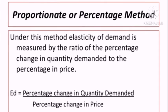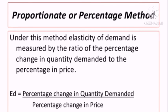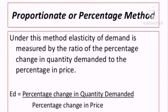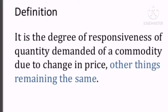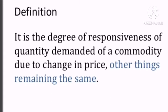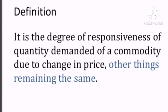Under the Proportionate or Percentage Method, elasticity of demand is measured as the ratio of percentage change in quantity demanded divided by percentage change in price. Elasticity of demand is the degree of responsiveness of quantity demanded of a commodity due to change in price, other things remaining the same.